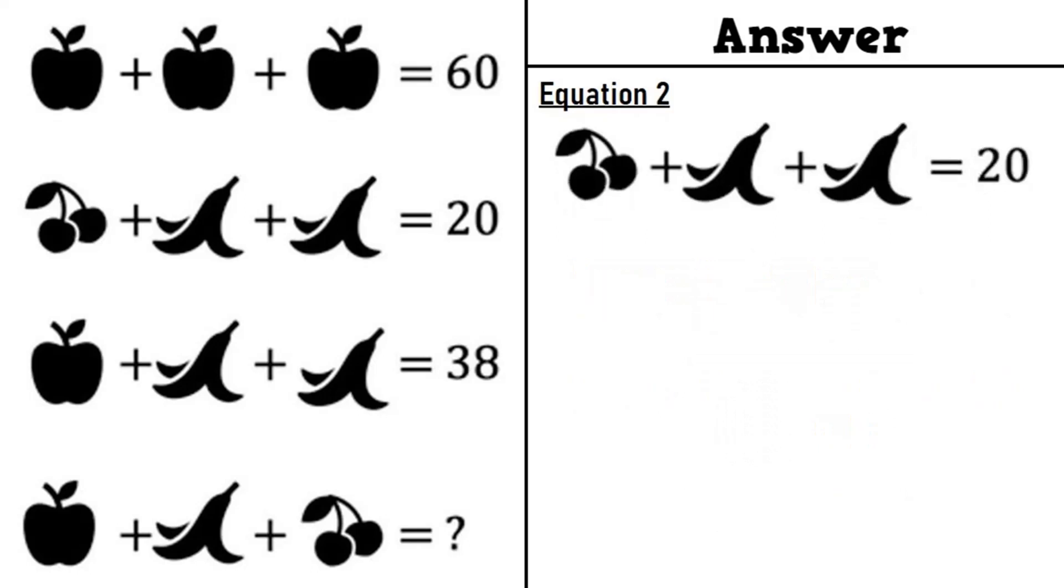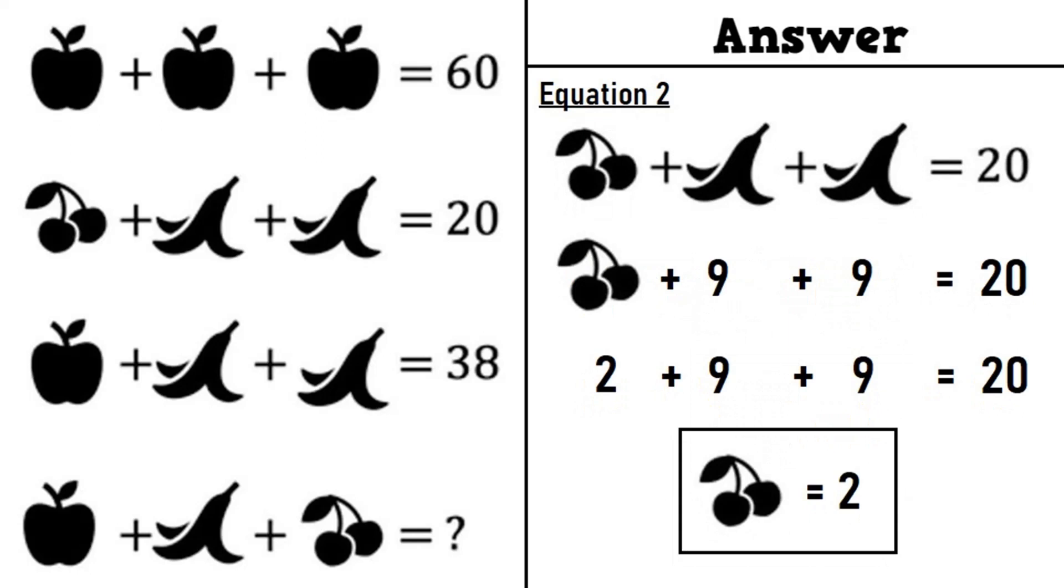Moving on to equation number 2, we have 2 cherries plus a banana plus a banana is equal to 20. From equation 3, we have a banana is equal to 9. Putting in equation number 2, 2 cherries plus 9 plus 9 is equal to 20. 2 plus 9 plus 9 is equal to 20. 2 cherries is equal to 2.